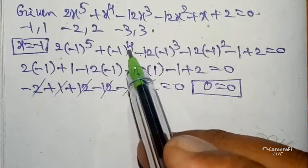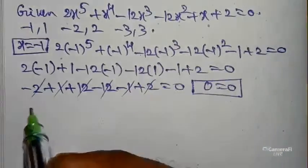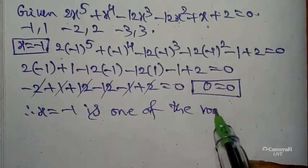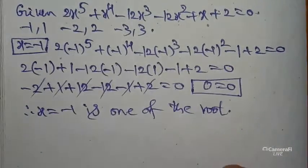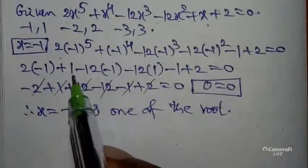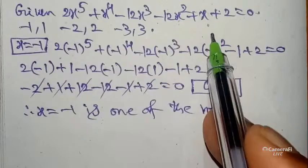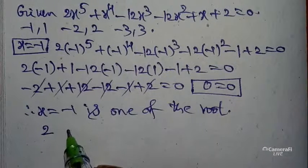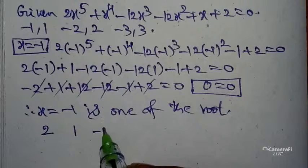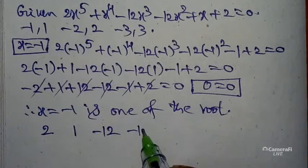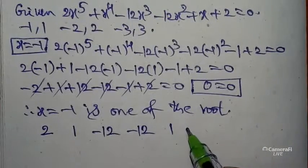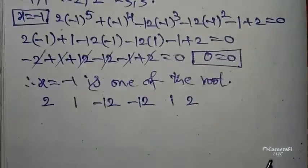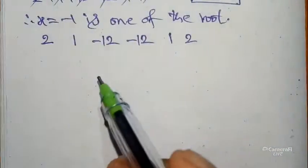Here x = -1 is satisfying the given equation. So x = -1 is one of the roots of the given equation. After getting this, we take the coefficients from the given equation: x⁵ coefficient is 2, x⁴ coefficient is 1, x³ coefficient is -12, x² coefficient is -12, x coefficient is 1, and the constant is 2.